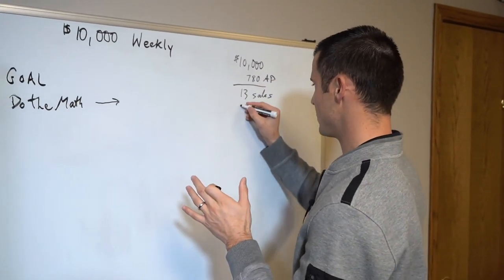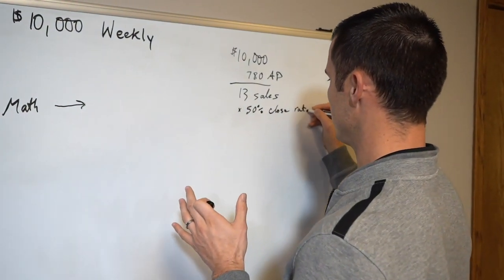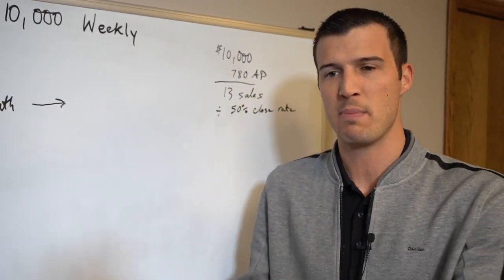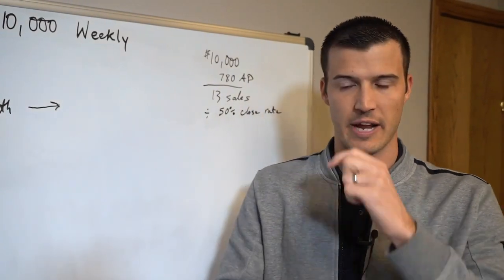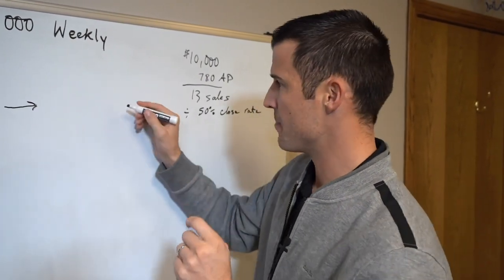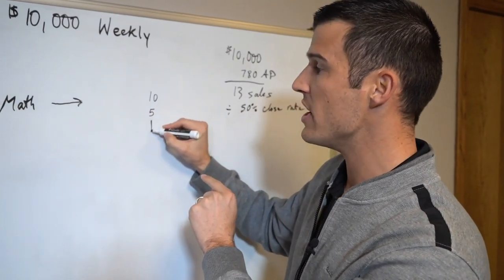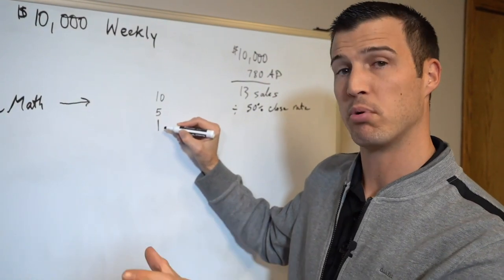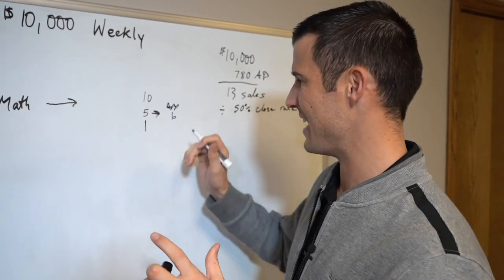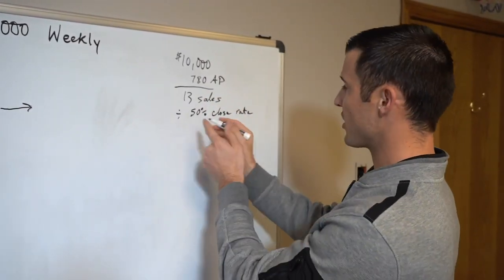Now let's just say you're at a 50% close rate. So you would actually divide that to come up with a bigger number. 50% close rate, which means if you sit with two people you'll close one. If you sit with 10, you'll close five. Now what we're not accounting for that also happens is if you sit with 10 people and you sell five, and let's just say one of the five was actually a couple, so it was a double sell, then your app count ends up being six. We're not taking that into account, but that is part of it.